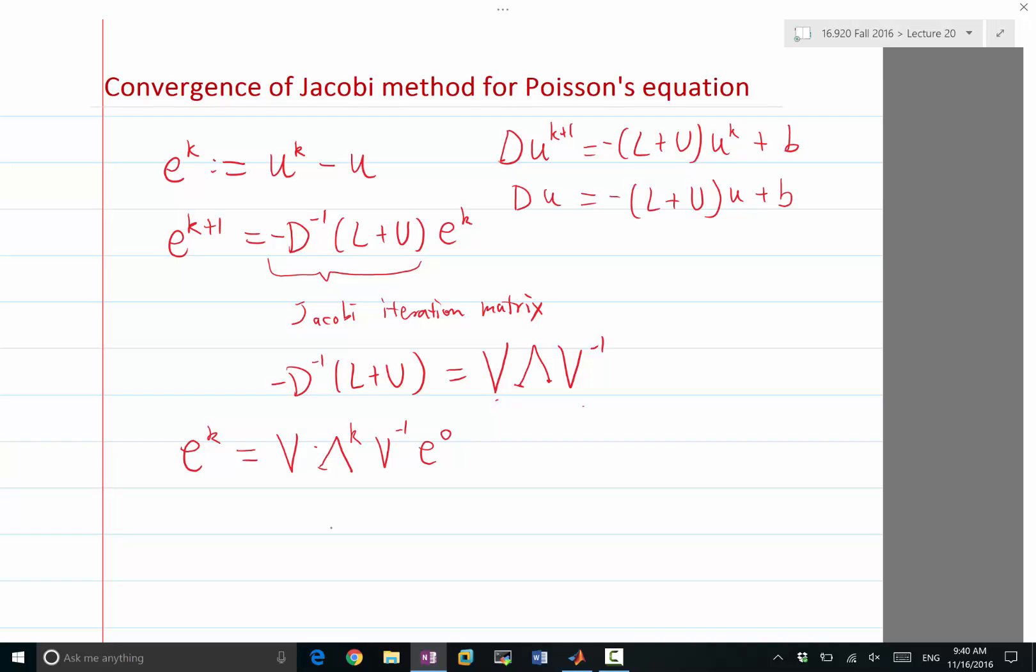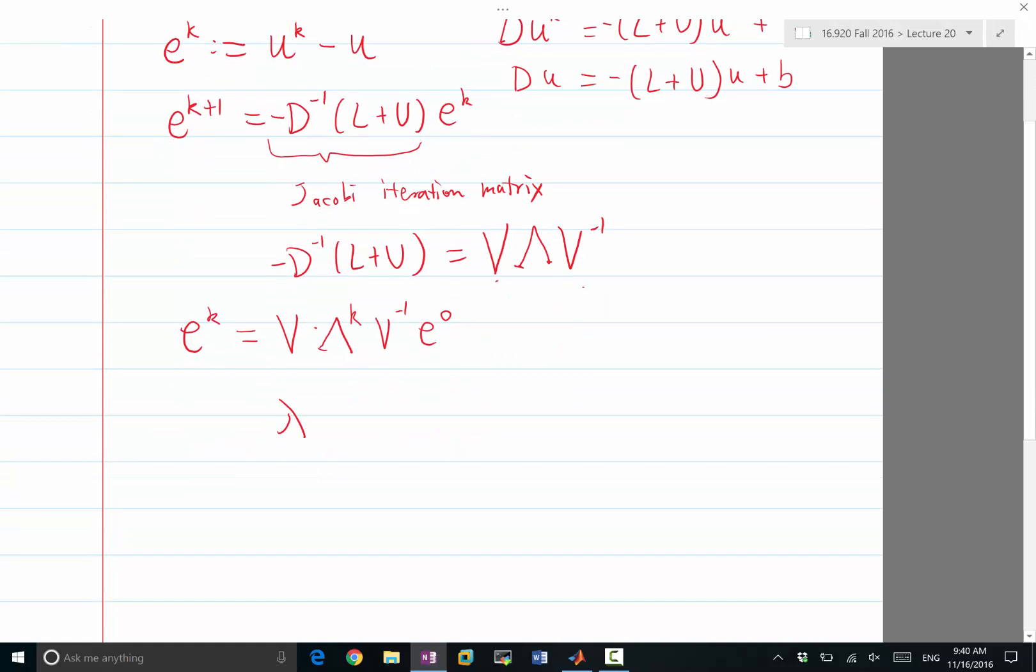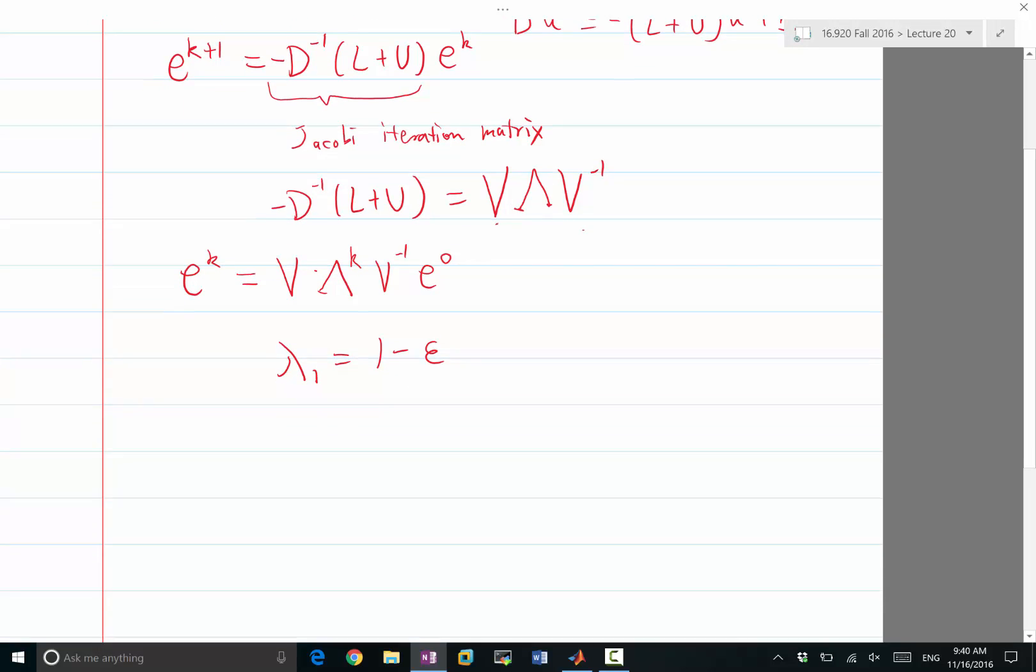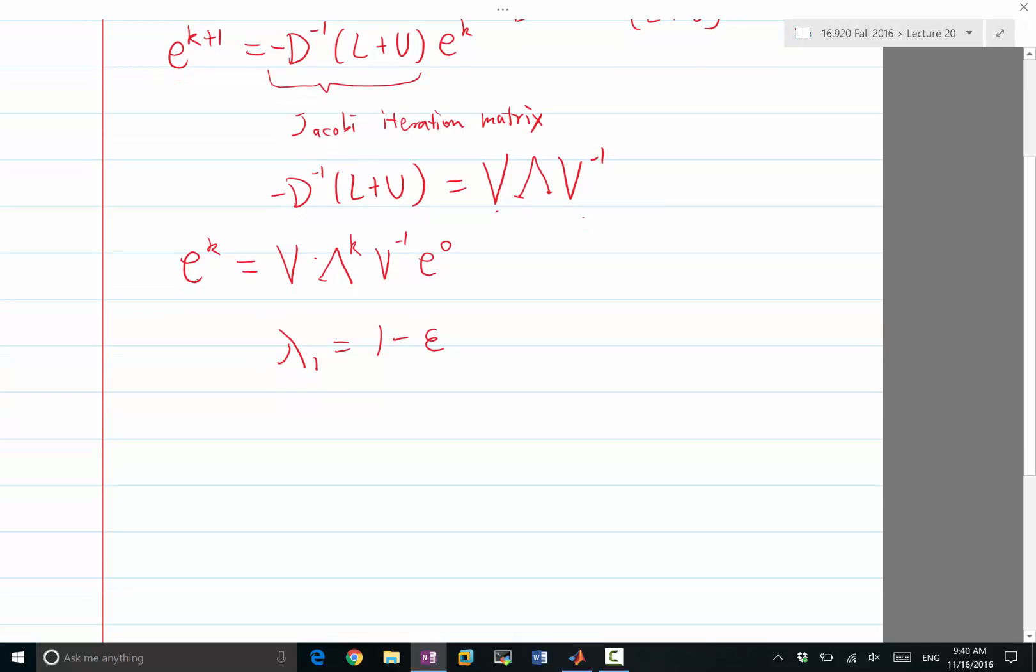And how slow would it converge? It would depend on how close lambda is to 1. For example, if a particular lambda, let's say lambda_1, is equal to 1 minus some small epsilon, which means there is one eigenvalue very close to 1, then for E to decrease by a significant factor, we have to put enough k such that, if I want E^k to be about half of E^0, that would require a k such that (1-ε)^k is about half. Do we know an approximation to this number, 1 minus a small number to a large power?